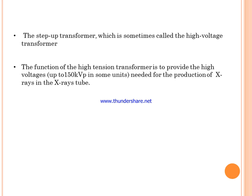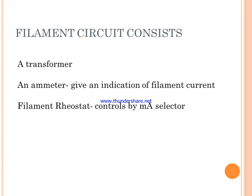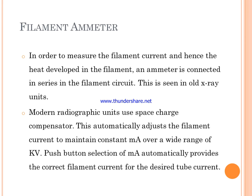The step-up transformer is sometimes called the high voltage transformer. Its function is to provide the high voltage needed for the production of X-rays in the X-ray tube. The filament circuit consists of a transformer and an ammeter which gives an indication of filament current, and a filament rheostat which controls the mA selector.